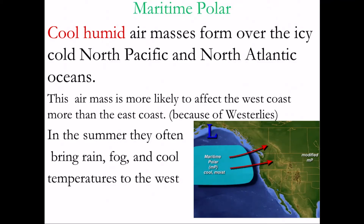Maritime polar also forms over the ocean, but it's polar, meaning it's colder in temperature. This colder, higher-moisture air can form off the west coast of the United States and Canada, or on the east coast. Generally, the western one has more effect on North American weather because the prevailing winds at this latitude move from west to east, so that maritime polar air mass off the west coast in the Pacific is more often moving into the land. If a maritime polar air mass comes toward you, expect rain, fog, cooler temperatures, and maybe even stormy conditions — especially if it meets maritime tropical or warmer air.